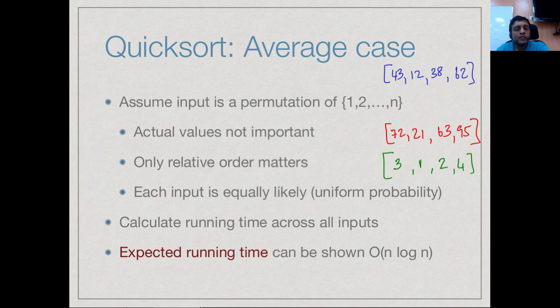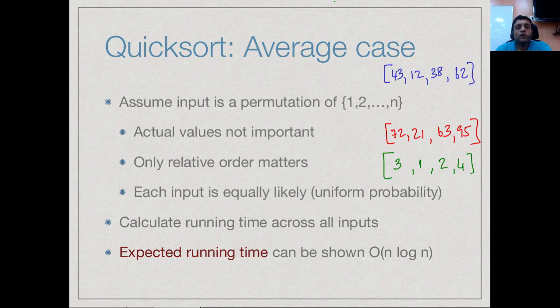Among these permutations, we do not have any preference. Any one of them could come as our input. We all know that there are n factorial such permutations and we say that each of them is equally likely. Each of them has probability 1 by n factorial of occurring. We look at all these n factorial inputs of size n and see how our algorithm behaves. We will not do the actual calculation, but if you see the average, you see the actual time it takes for all these n factorial inputs, add it up and divide by n factorial.